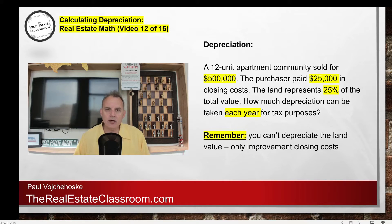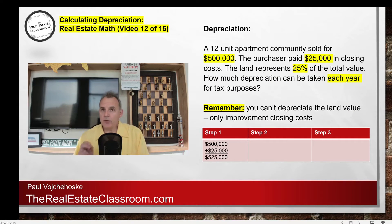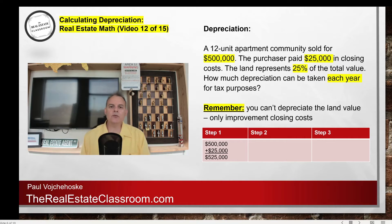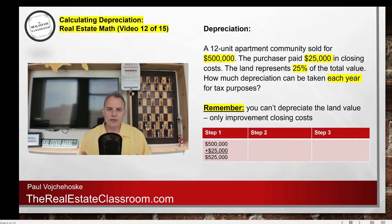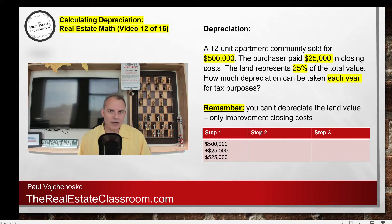There are three steps to this calculation. Step one: we add the purchase price of $500,000 to the $25,000 in closing costs or acquisition costs, which gives us a total of $525,000. That's step one.